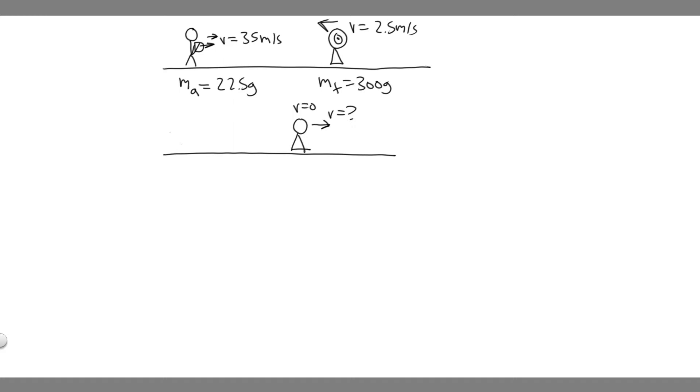What is the speed of the arrow after passing through the target? So this is basically what's going on right, so this is going to be what happens before and what happens after.